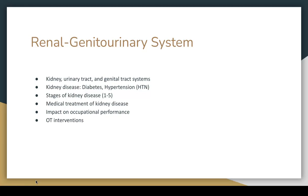Signs and symptoms of chronic kidney disease include vomiting, loss of appetite, fatigue and weakness, sleep disorders, changes in urinary output, decreased mental clarity, muscle twitches and cramps, excessive swelling in the feet and ankles, persistent itching, chest pain from fluid building up around the heart lining, shortness of breath from fluid buildup in the lungs, and uncontrolled high blood pressure. It is important for us to recognize these signs so we can alert the medical team to changes with our clients.